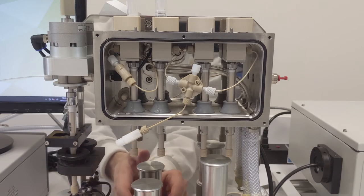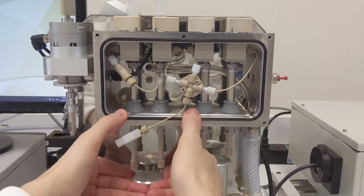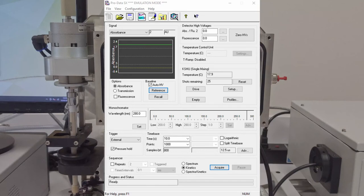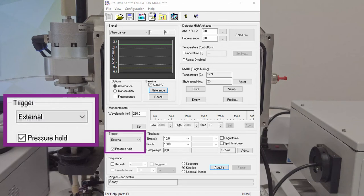After installing the ram and filling syringes with water, it's a good idea to test for leaks. Just set up the following experimental template, making sure the pressure hole checkbox is ticked, and press acquire.